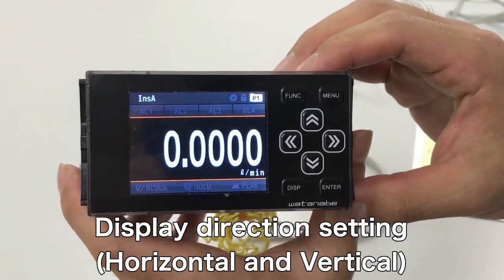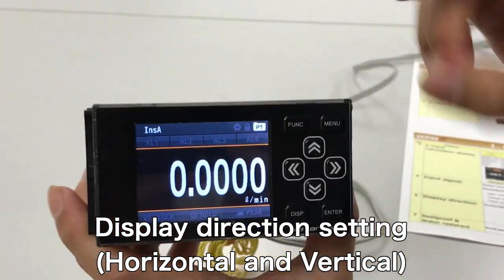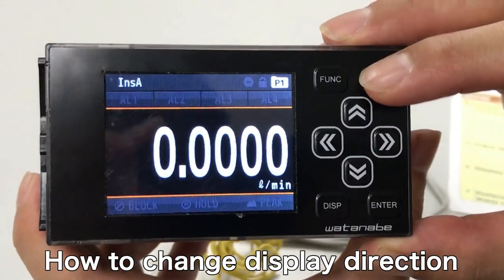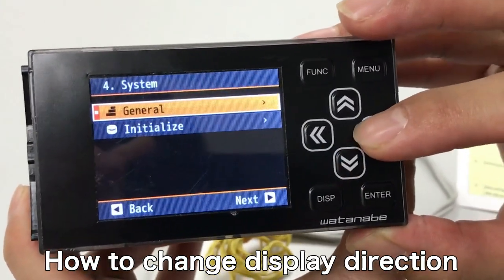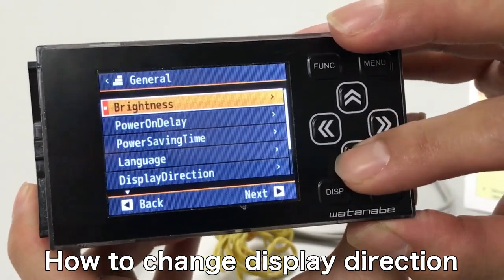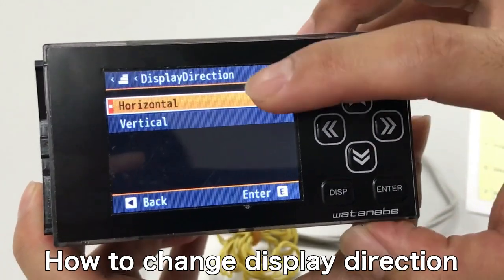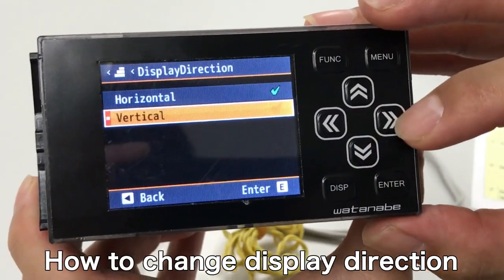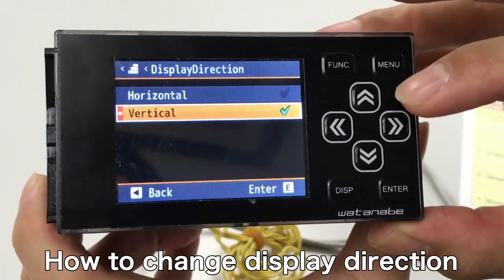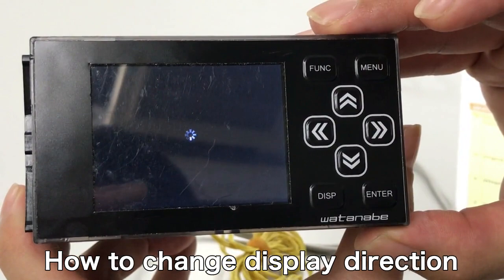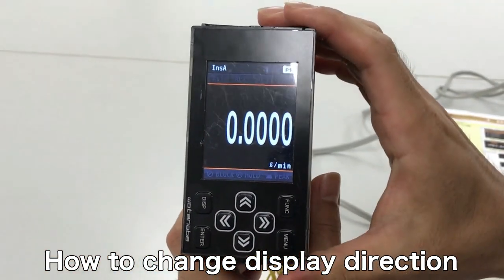WPMZ can also be used vertically. So now I will try to change the display direction. Just push menu button and choose system and general and display direction. And now horizontal. So change into vertical. Enter and menu. So now you can show it, use it as vertically.